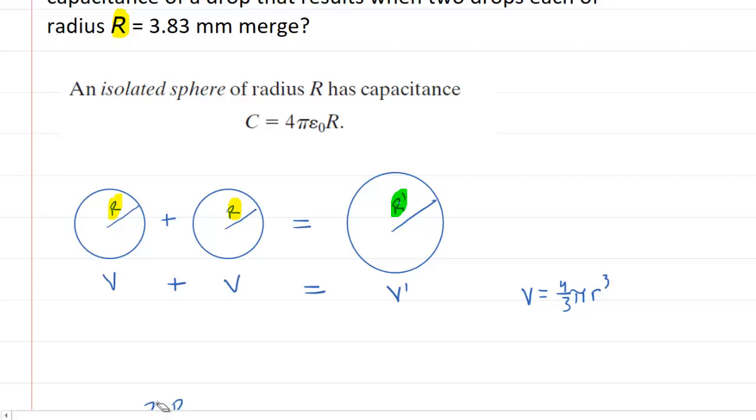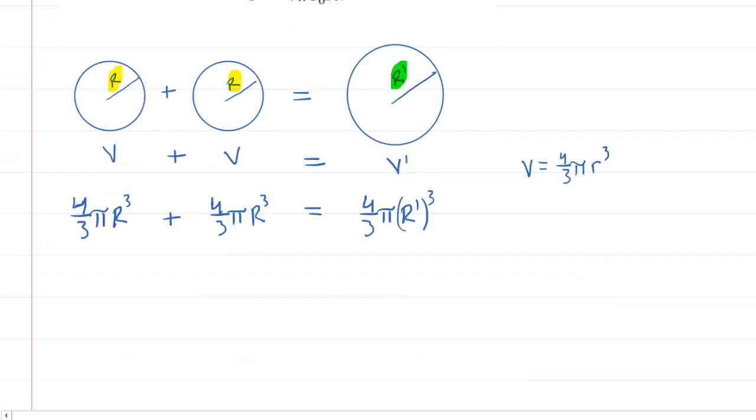So, what we're going to do is for the volume of this first sphere use that equation. We would have 4/3 times π times the radius cubed. We're going to add that to 4/3 times π times its radius cubed. And then this will equal 4/3 times π times the new radius, which is r prime cubed. And our job is to find that new radius, r prime.